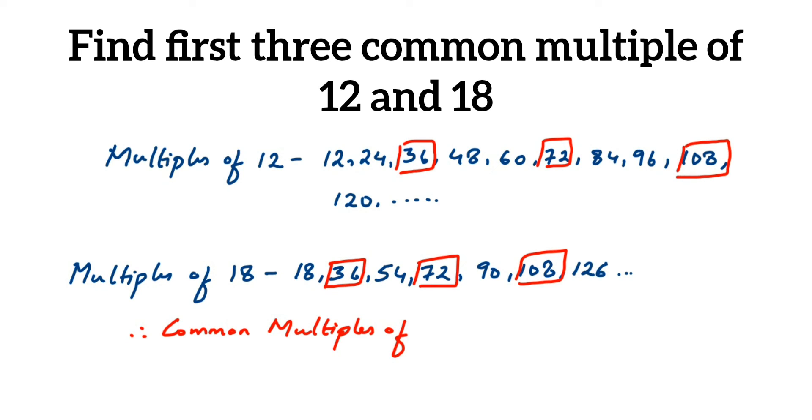Then you can proceed further, write down more multiples of each number and try to get the common multiple. So here we got the first three. The common multiples of 12 and 18 are: first is 36, then 72, then 108.